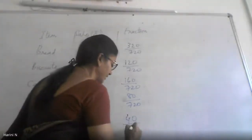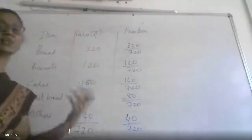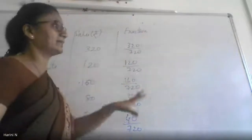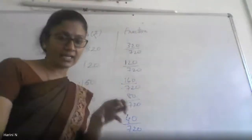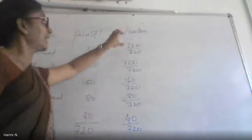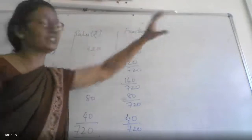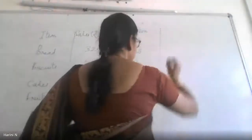Once the fractions are ready, you have to find in the complete circle what angle corresponds to each fraction. The next column you make will be the central angle.